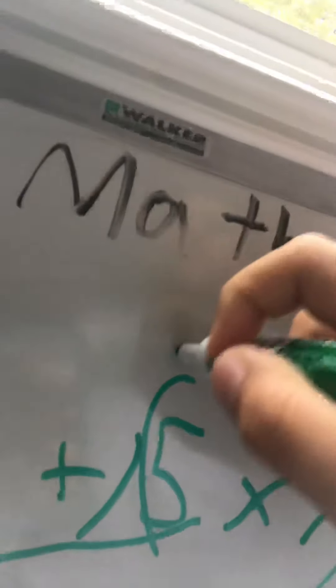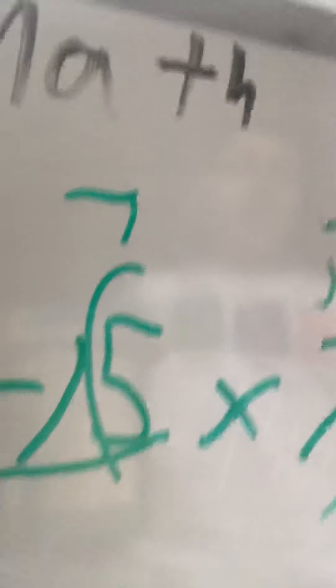2 plus 5 times 7. 2 plus 5 is 7, times 7 is 49.